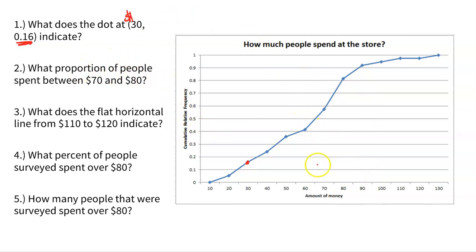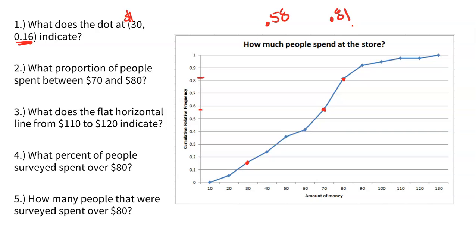What proportion are between $70 and $80? I'm going to find the dot for 70 and the dot for 80 — I noticed a really big jump there. The dot for 70 is a little bit below 60%, so maybe the 58th percentile. And the dot for 80 is a little bit above the 80th percentile, maybe the 81st. So the difference is about 0.81 minus 0.58 — about 23%. That's almost a quarter of the data falling simply between $70 and $80.